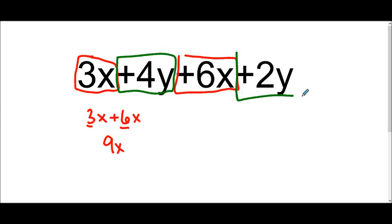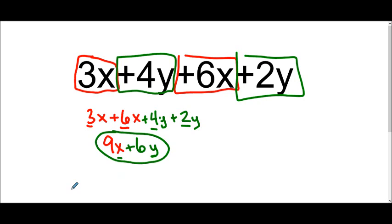Then I can take my terms that have the variable of y, so plus 4y and plus 2y. And again, when I add just those coefficients, 4 plus 2 makes 6, so that's a positive 6, and I keep the variable of y. In order to be in standard form, we want to make sure that our variables are in alphabetical order. So x comes before y. I can't simplify this any further, so that's my answer.